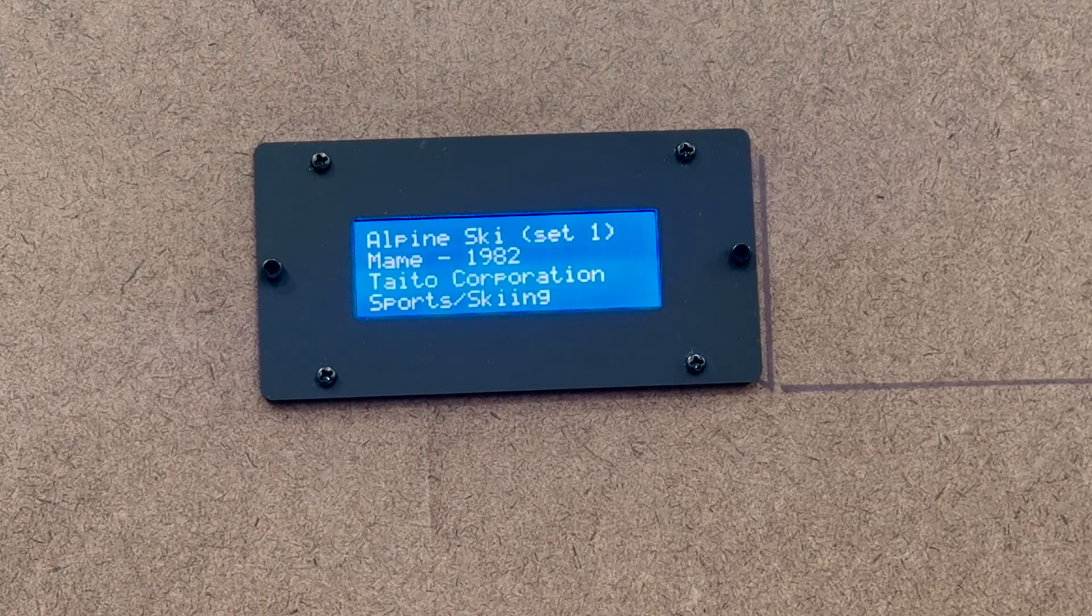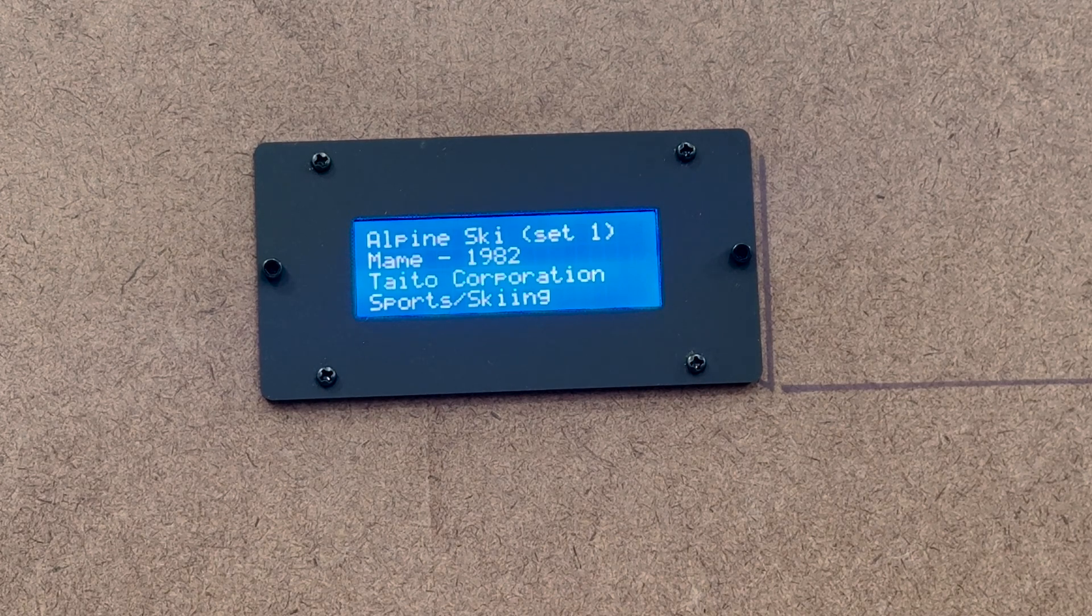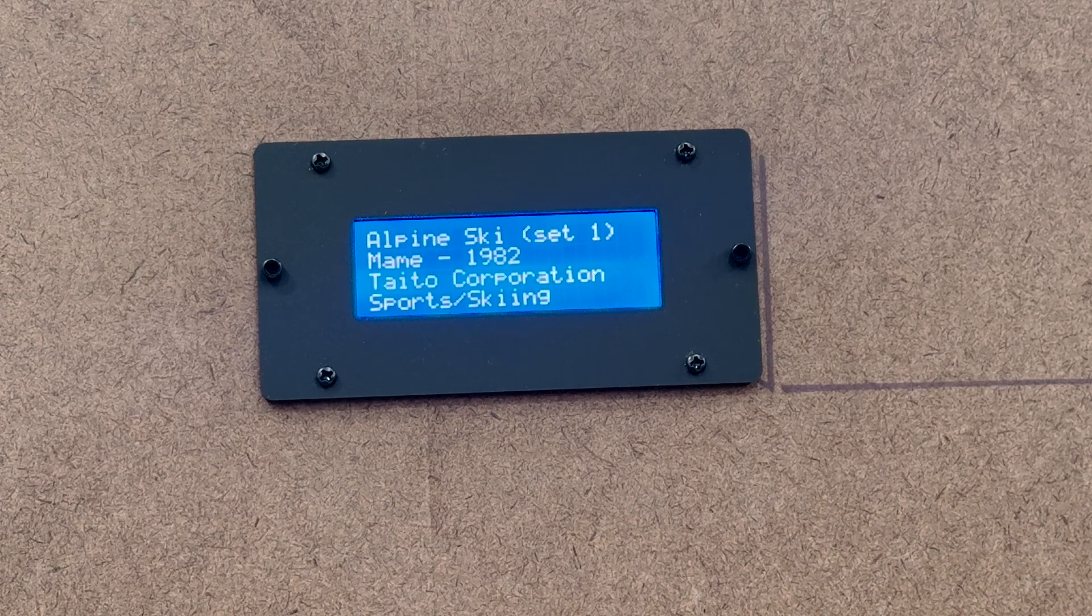It's going to show some metadata. The first line is the name of the game, second line is the platform. You can also see the year the game was made.